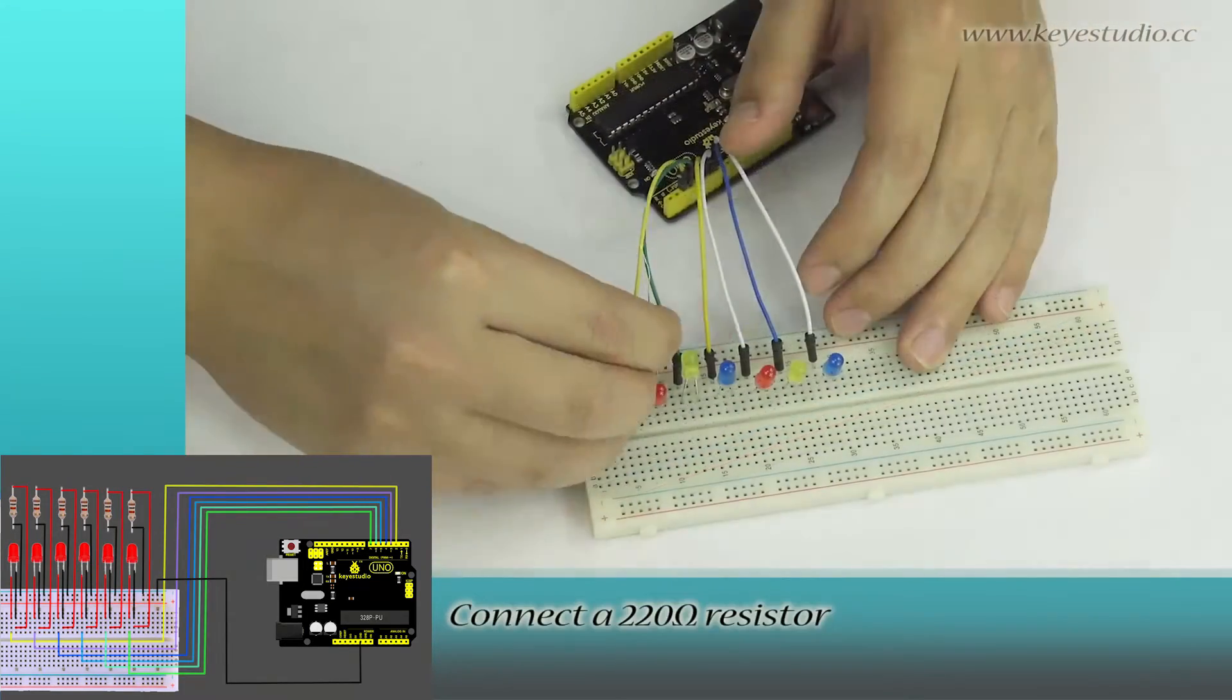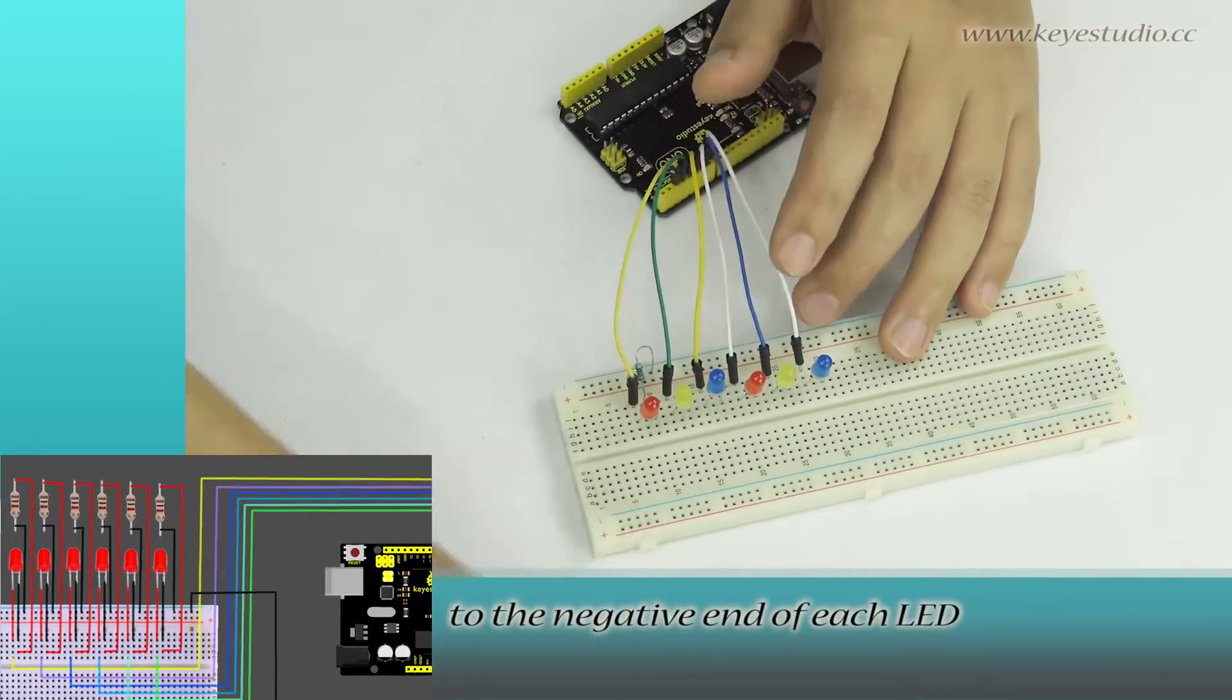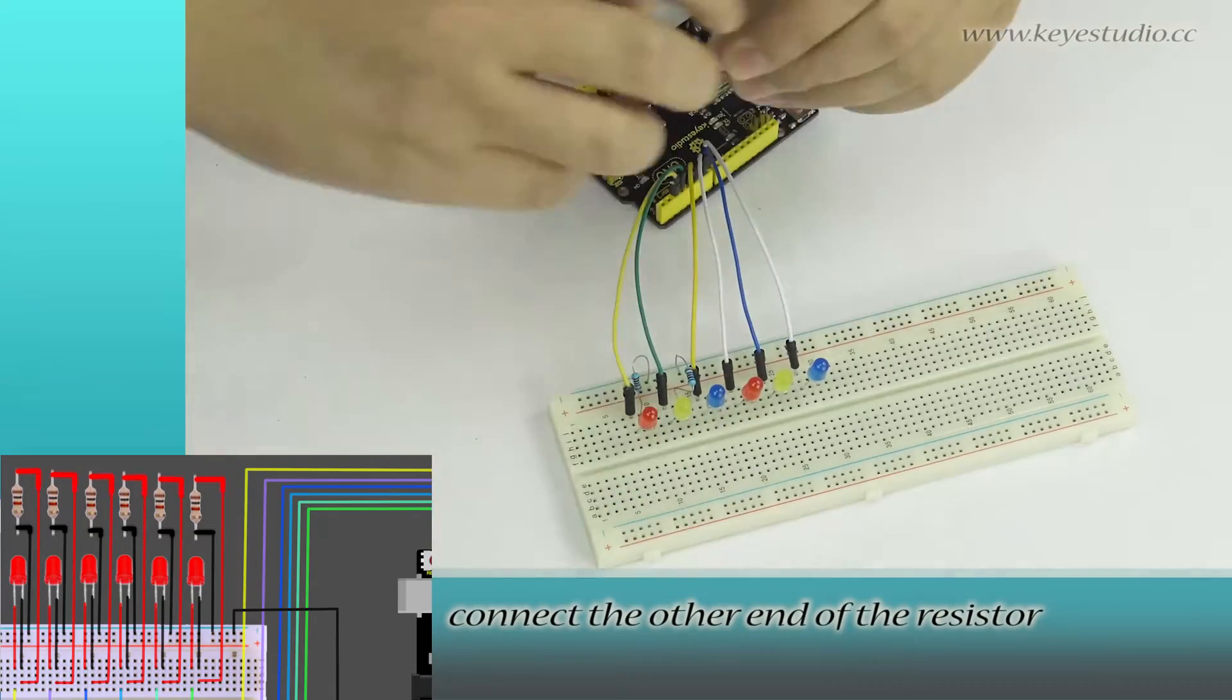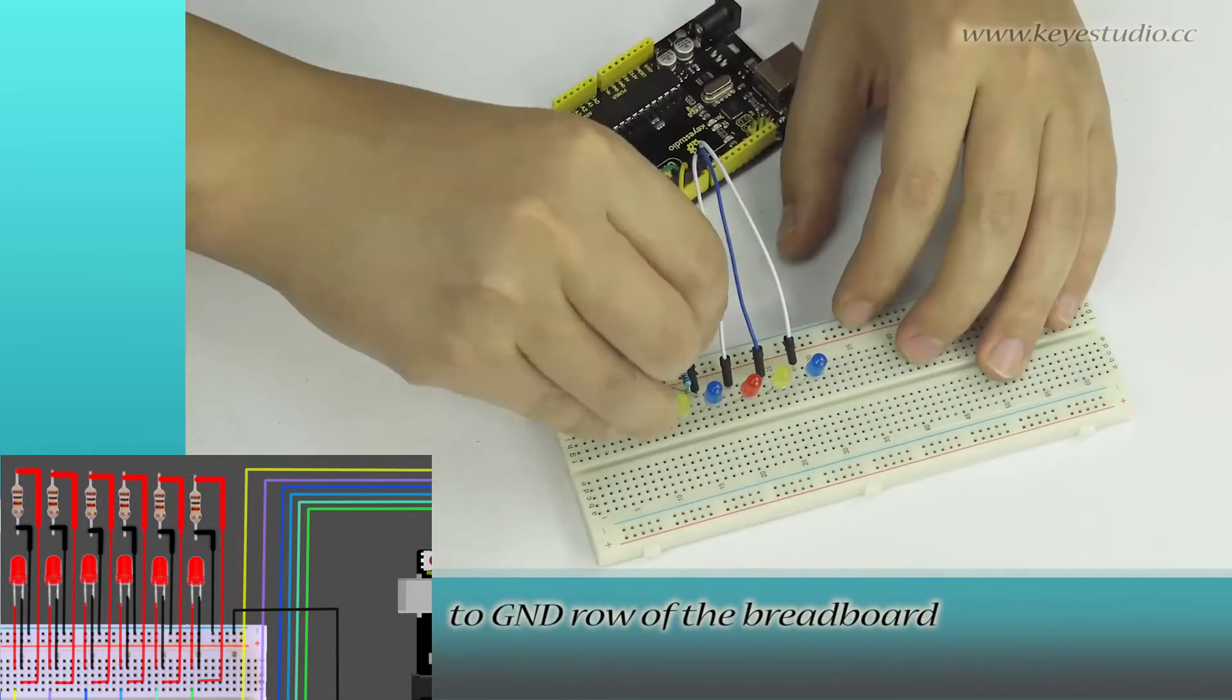Connect a 220 ohm resistor to the negative end of each LED. Connect the other end of the resistor to ground row of the breadboard.